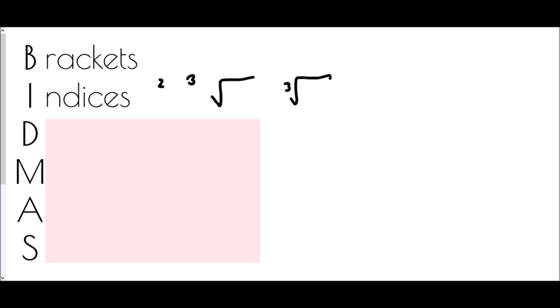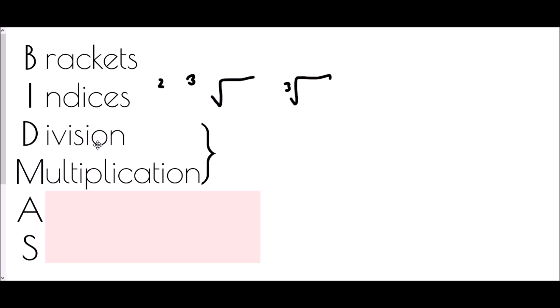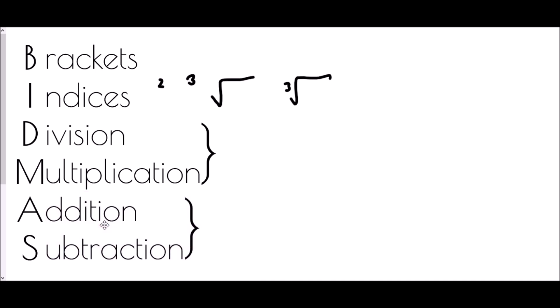Next we get two letters together: D and M. Division and multiplication have the same priority — they come at the same time. We just do them in the order they appear. The same applies for A and S — addition and subtraction. They are given the same priority and are completed in the order they appear in the question.